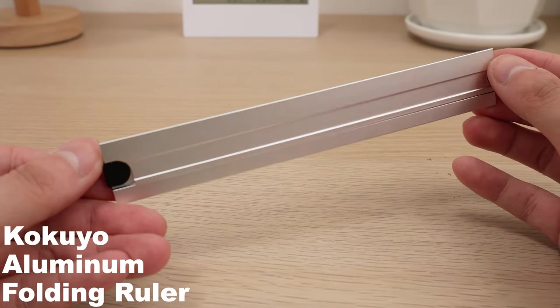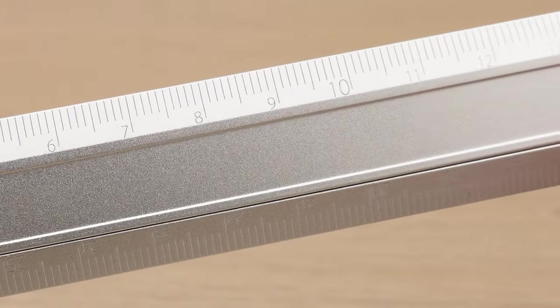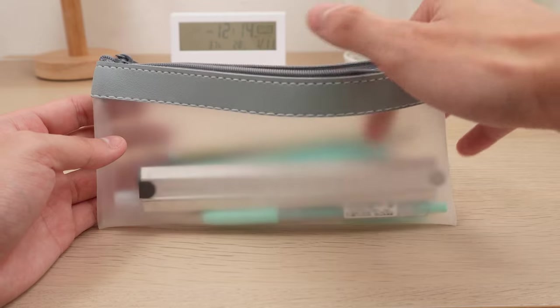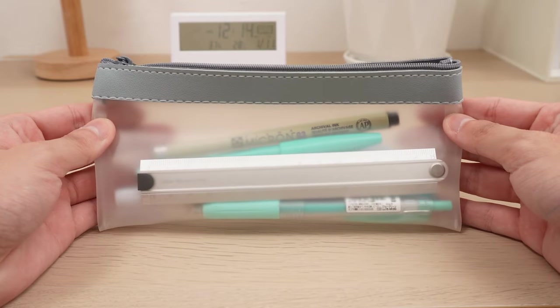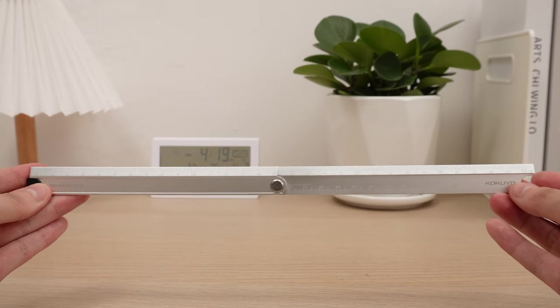Let's talk about the Kokuyo Aluminum Folding Ruler, a top-quality tool made of durable aluminum. It folds neatly, fitting into your pen case with ease. Unfolded, it can measure up to 30cm, making it versatile and portable.